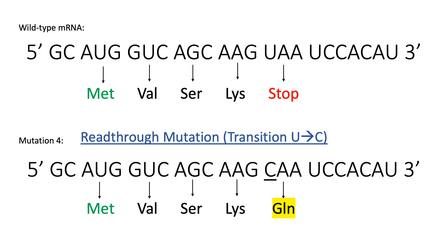He finds the last mutation to be a read-through mutation, due to the fact that it encodes for a regular amino acid instead of a stop codon. This is classified as a transition, since it only involves a pyrimidine to a pyrimidine change — uracil to cytosine.